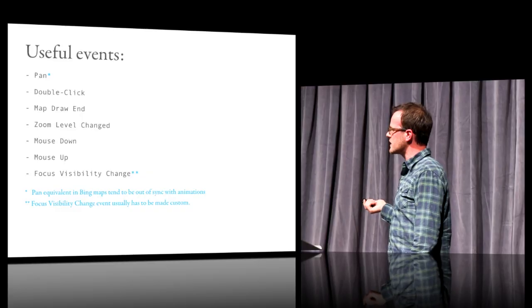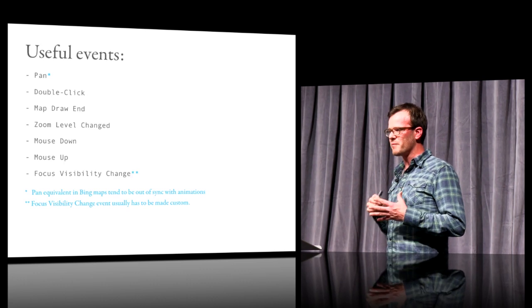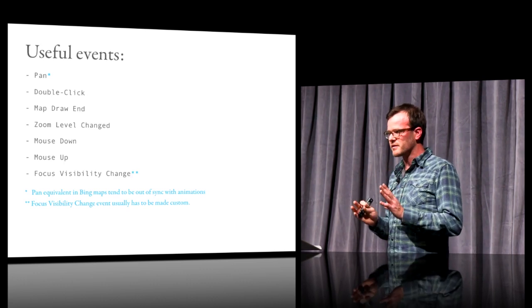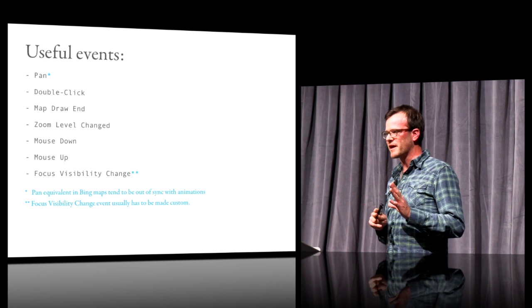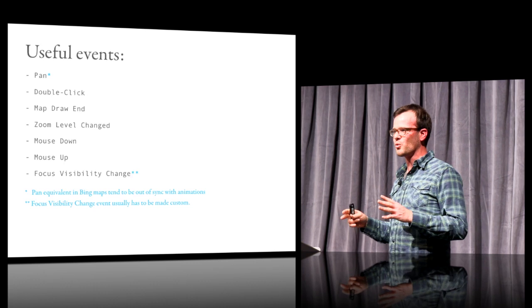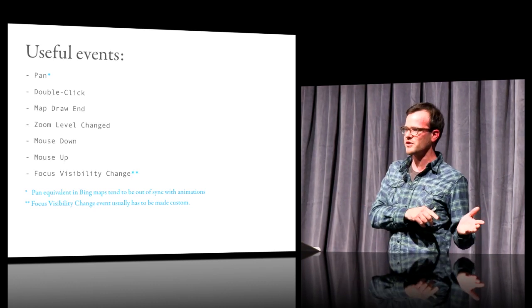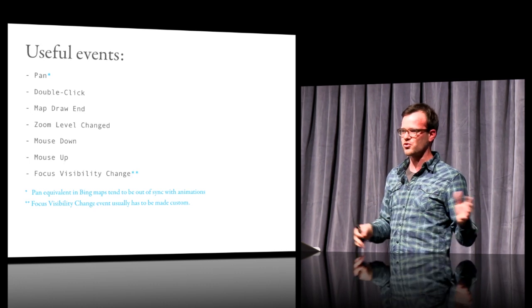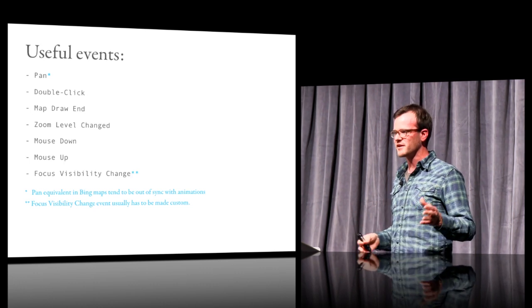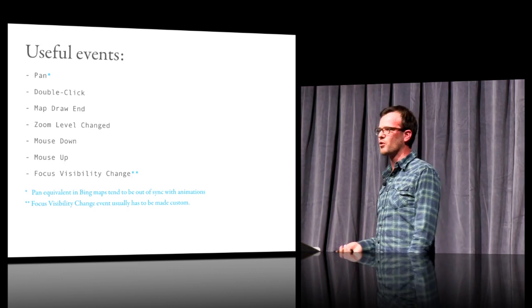One event I always end up reproducing in all of these different map providers is focus visibility change — which basically means: usually you're going to put your map elements in a specific spot on the globe, and when you pan away from that, they'll just keep going off the screen. So it's nice to know when what you consider to be the center of the map has moved off of the screen, and then you can destroy all of those UI elements and all of the events keeping them in line with the map — just a little way of making performance better on the map.